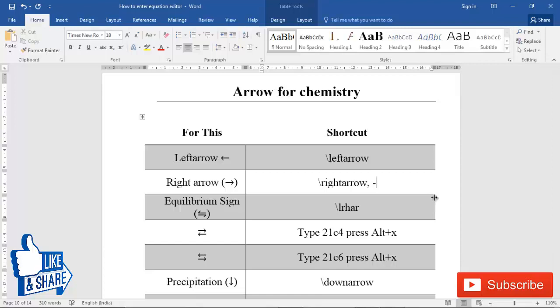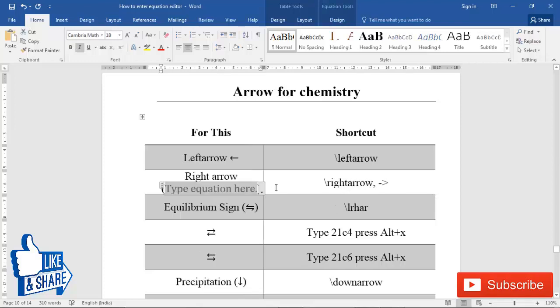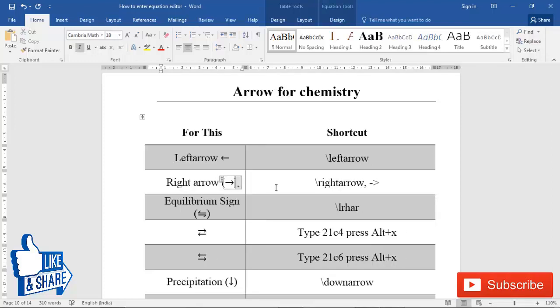Right arrow, actually there is another shortcut inside equation editor. You just type minus sign and then this arrow. I'll just show you backslash right arrow shortcut, but you can just type this minus sign and this arrow. This is for right arrow.